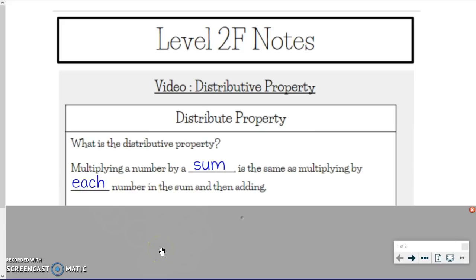The distributive property is when you can multiply a number by a sum. We could say difference too, but we're going to only focus on sum for this unit. So you can multiply a number by a sum, like taking 2 times 3 plus 5 together. So we could multiply that number to the sum and that's the same as if we were multiplying by each number in that sum and then adding.